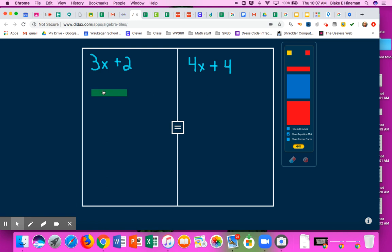I always like to use the green bars for my x's. So on this side, I can see that I have three x's: 1, 2, and 3. And I have a plus 2. I use the small yellows for my positives. So here we have 3x and 2, 3x plus 2.